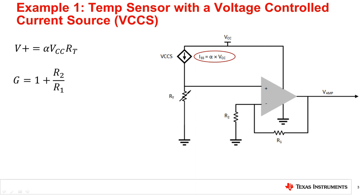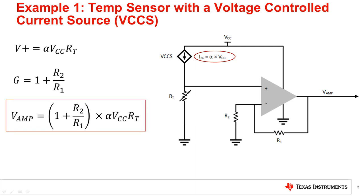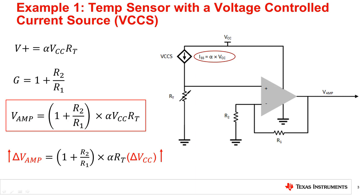The output of the circuit can be simplified to this equation. By doing some basic math, the relationship between the supply voltage variation and the output signal can be derived. As the supply voltage variation increases, the output increases. Similarly, with the supply voltage variation decreasing, the output variation decreases.